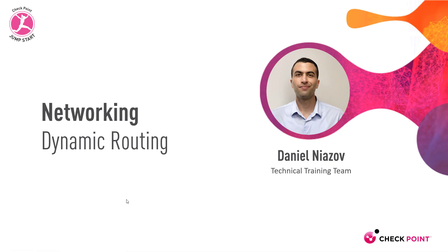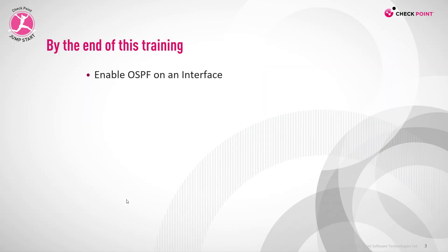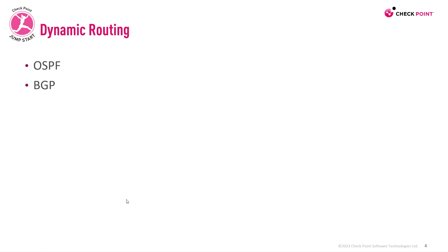Networking dynamic routing. By the end of this training, you'll be able to enable OSPF on an interface. When you talk about dynamic routing, there is so much to discuss — it's a very efficient way to build your routing table in a dynamic and automatic manner. You need to enable the dynamic routing protocol, configure it, and watch the magic happen. OSPF and BGP are two common, very useful dynamic routing protocols that come to mind.